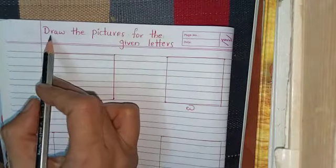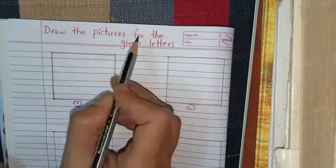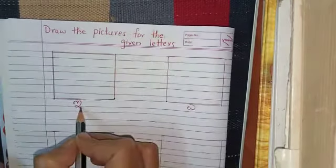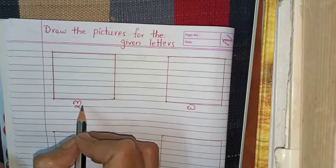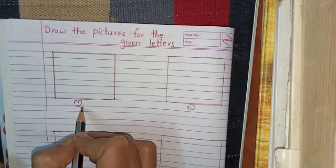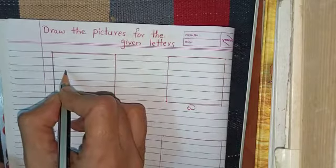See here children, the question is, draw the pictures for the given letters. First one is, which letter is this? This is E. You have to draw the picture related to E. That is E-Iruwe, you can draw.